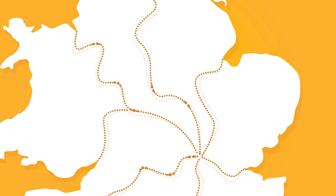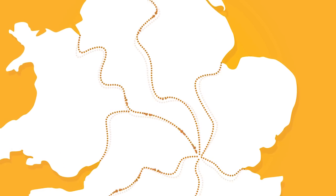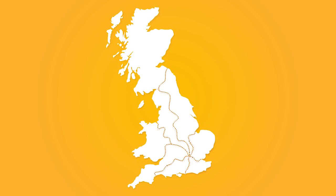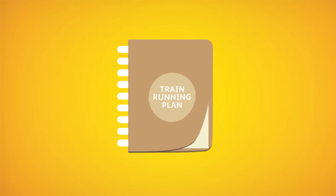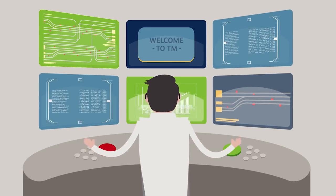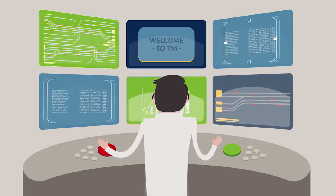When a significant event occurs and a new train plan is required, TM in a simulation mode can be used to generate new options that can be circulated to industry colleagues. Once the impact of each option for a new plan is understood, the plan can be implemented. This helps to speed up recovery and minimize reaction re-delay.